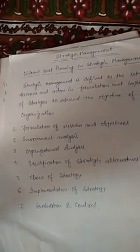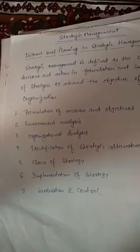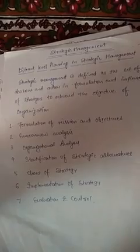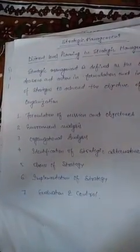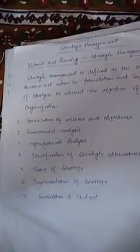To summarize different level planning in strategic management: you make decisions, create a business plan, and take action in the formulation and implementation of strategies to achieve organizational objectives. The different steps are: formulation of mission and objectives (strategic intent), environment analysis, organizational analysis, identification of strategic alternatives, choice of strategy, implementation of strategy, and evaluation and control. These are the different levels of strategic planning.